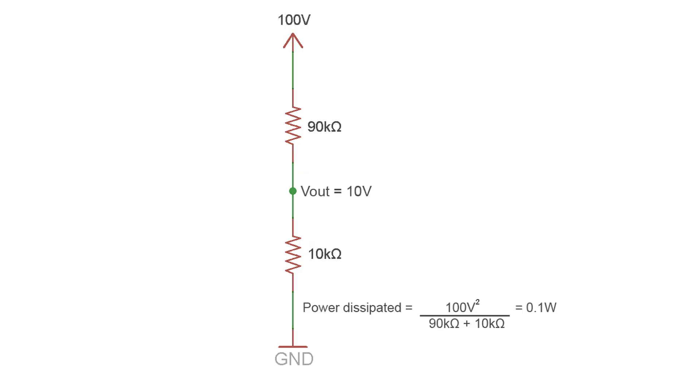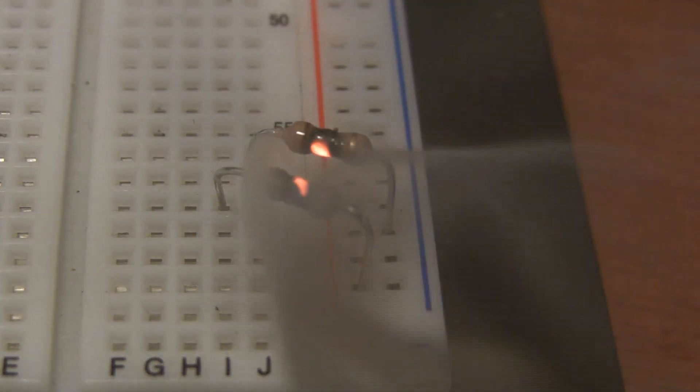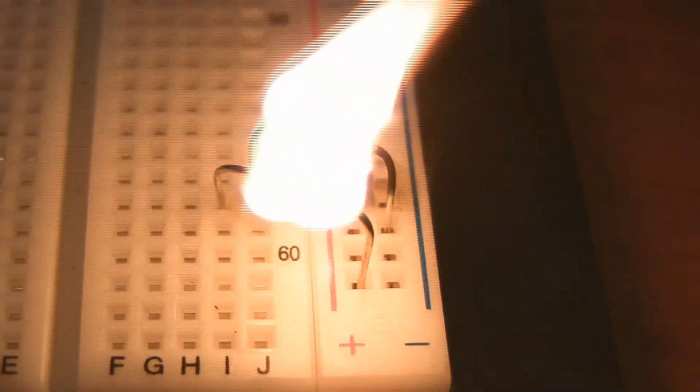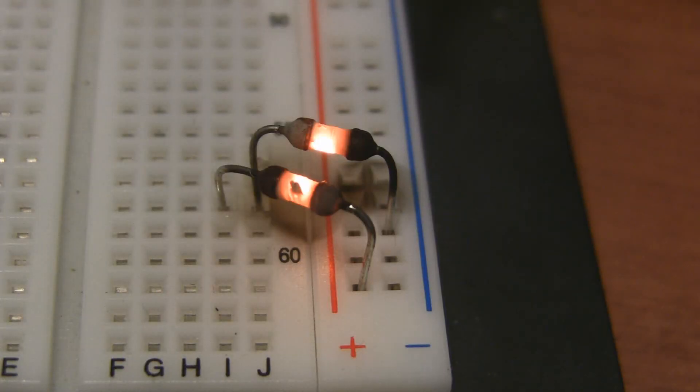With this circuit, the resistors are dissipating 0.1 watts, which isn't very much, so everything is fine. But in this circuit, the resistors are dissipating 1,000 watts, so the resistors are going to catch fire. The output voltage is the same in both cases, but the power consumption is totally different.